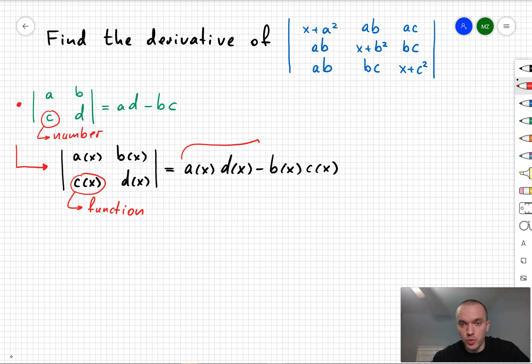So on the right-hand side, we're going to have a function. In other words, our determinant on the left-hand side is actually a function. So if we want to find the derivative, then what do we need to do with the right-hand side? We just need to apply the product rule two times.